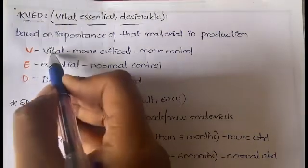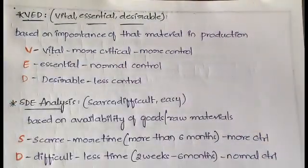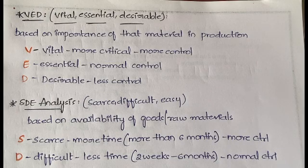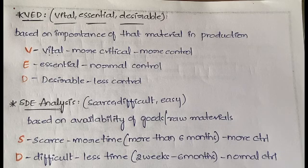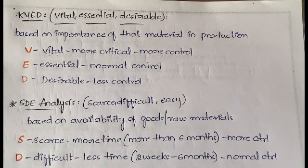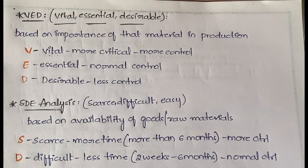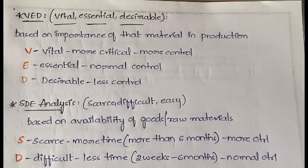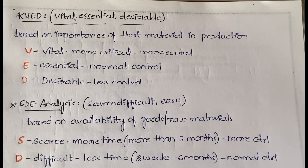In VED analysis, V stands for Vital — very important materials that need more control. E stands for Essential — materials that are not critical but not negligible either; they are in the middle stage and need normal control. D stands for Desirable — even if you don't have these materials nothing will happen; if you have them that's good, but you can manage without them, so less control is required.